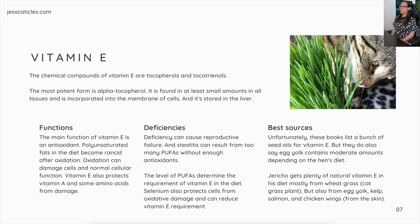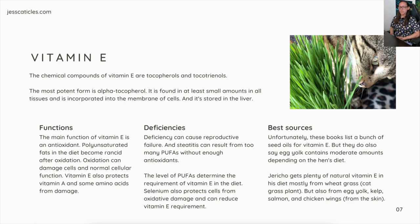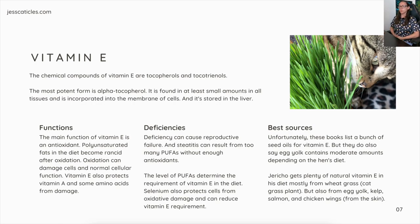Vitamin E. The chemical compounds are tocopherols and tocotrienols. The most potent form is alpha-tocopherol. It is found in at least small amounts in all tissues, incorporated into cell membranes, and stored in the liver. The main function of vitamin E is as an antioxidant. Polyunsaturated fats in the diet become rancid after oxidation when oxygen hits the food. Oxidation can damage cells and normal cellular function, and vitamin E protects against that damage, also protecting vitamin A and some amino acids.